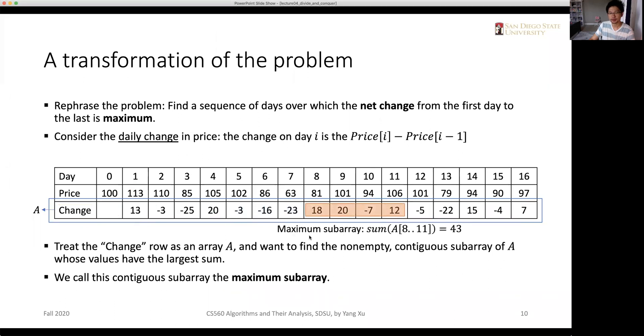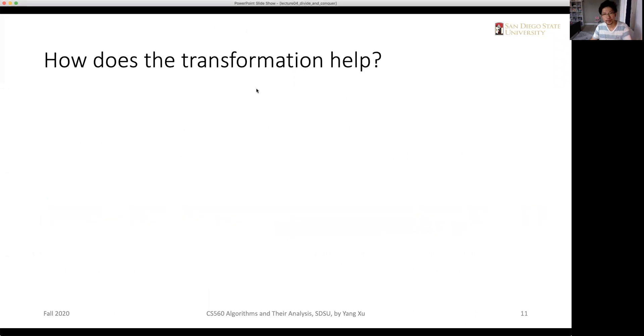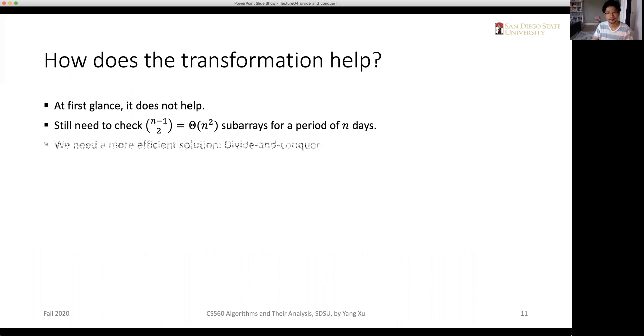And for example, in this particular case, the maximum subarray is the elements from A8 to A11, which gives us the maximum summation of 43 here. And let's look at how these transformations help. So maybe at first glance, it doesn't help, because we still need to check that many subarrays if we use the brute force way of thinking. But we'll later see that in the next video, we'll see how divide and conquer algorithms can be applied to this new input array, which basically counts the net change of each day.